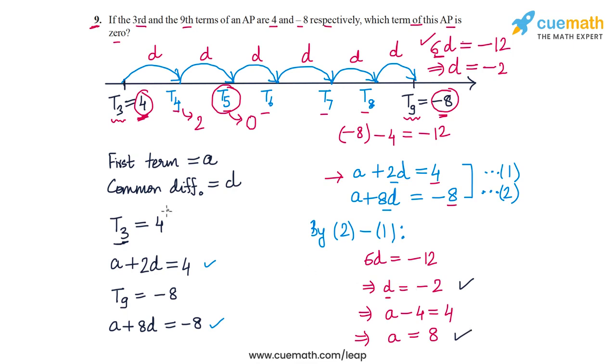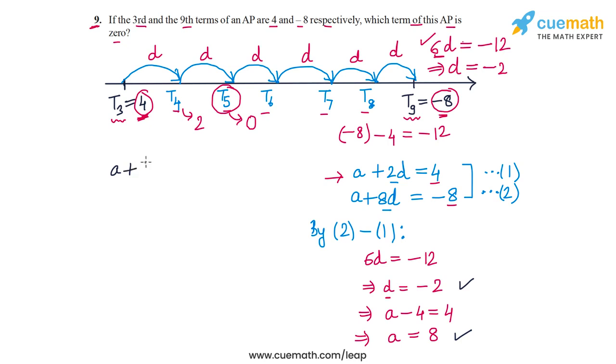Now all that remains is to find the position of the term zero in the AP. If the required position is n, then we have A plus (n minus 1)D. This should equal zero. Now we substitute the values of A and D. So 8 plus (n minus 1) times minus 2 equals zero.